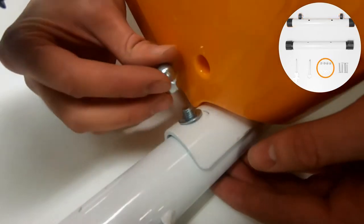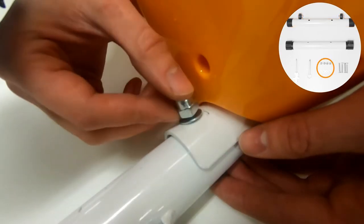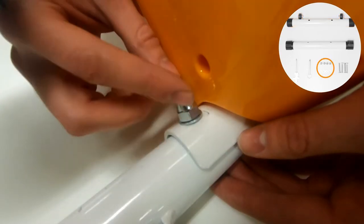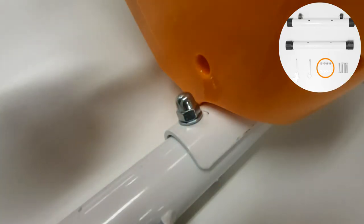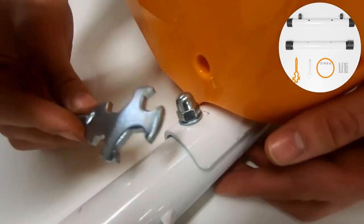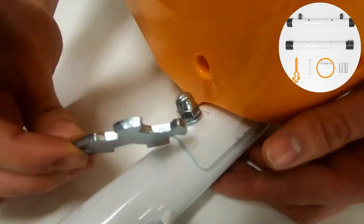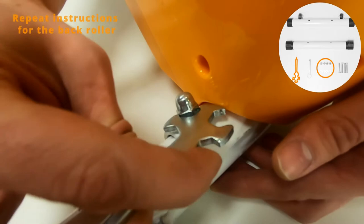Next, place the washers over the bolts, hand tightening the nuts. Use a 13mm wrench to fully tighten the nuts, then repeat the procedure for the rear roller.